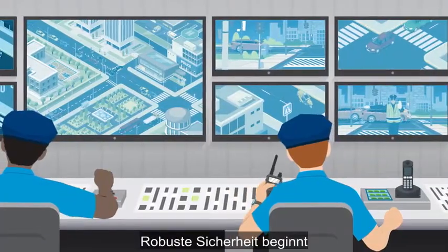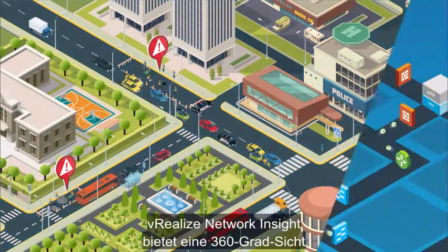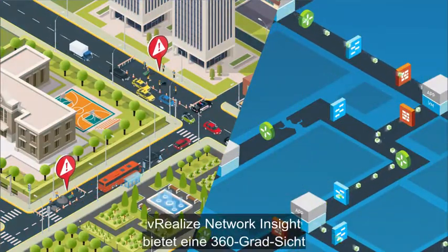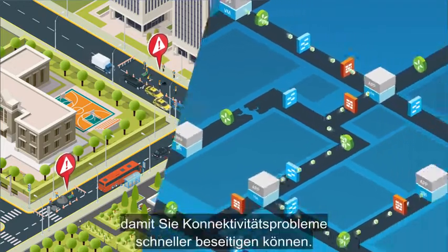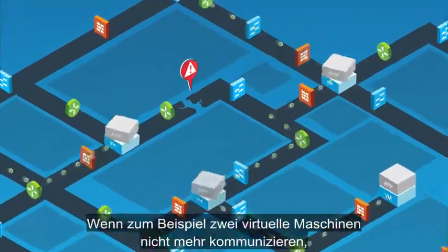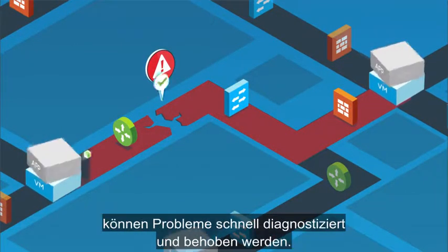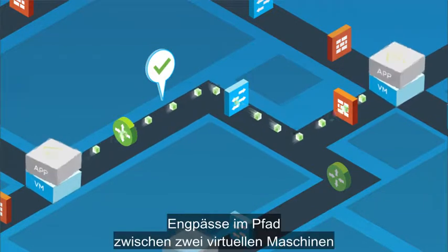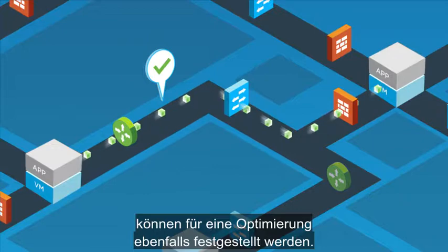Robust security begins with an all-inclusive view of the environment. vRealize Network Insight provides 360-degree visibility across virtual, physical and multi-cloud environments to help you quickly troubleshoot connectivity issues. For example, if two virtual machines are unable to talk to each other, issues can be quickly pinpointed for rapid resolution. Bottlenecks in the path between two VMs can also be identified for optimization.